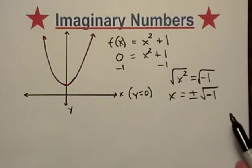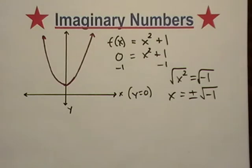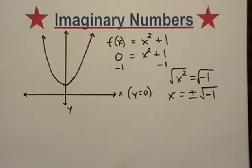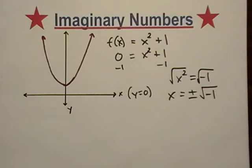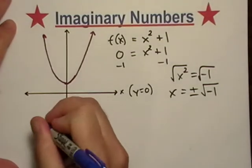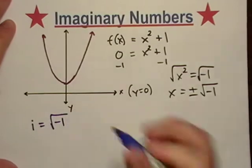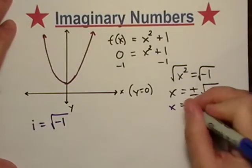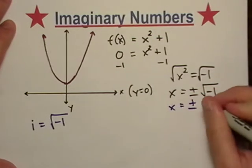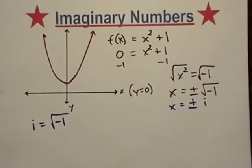Well, what two numbers do I multiply together that give me negative one? Well, it turns out to get around this problem, mathematicians actually defined a number. And you've probably already seen it by now, but it is i, it is the imaginary unit, and it is defined to be the square root of negative one. So we could go over here and we could say that x is equal to plus or minus i.